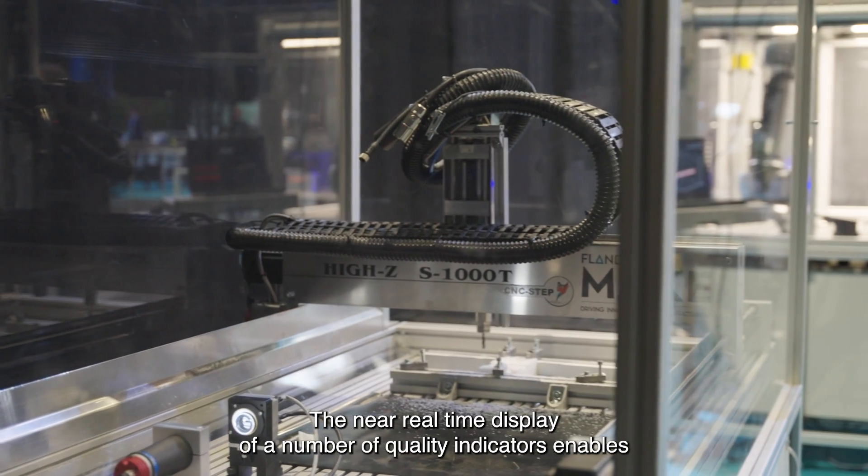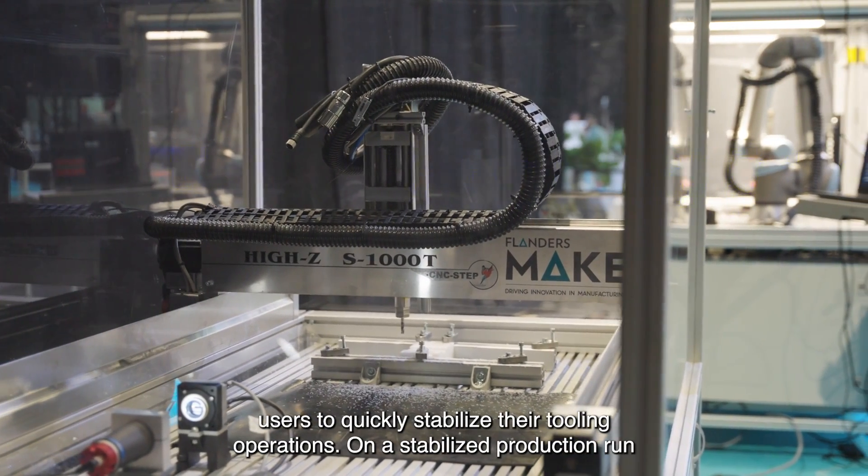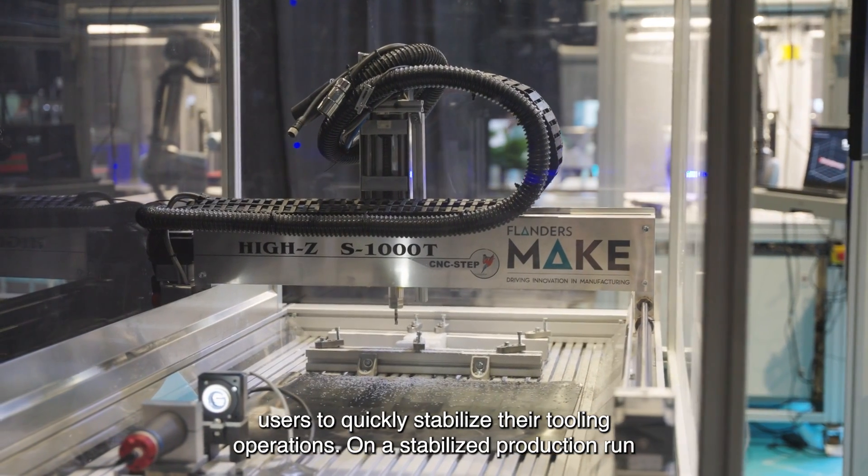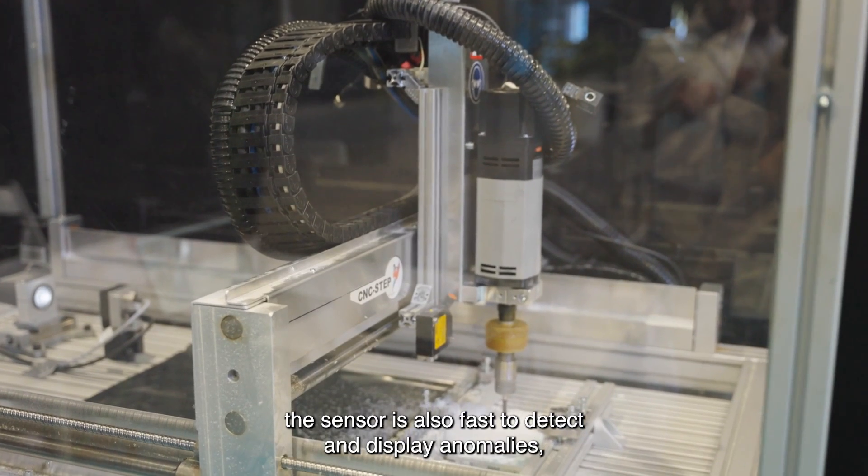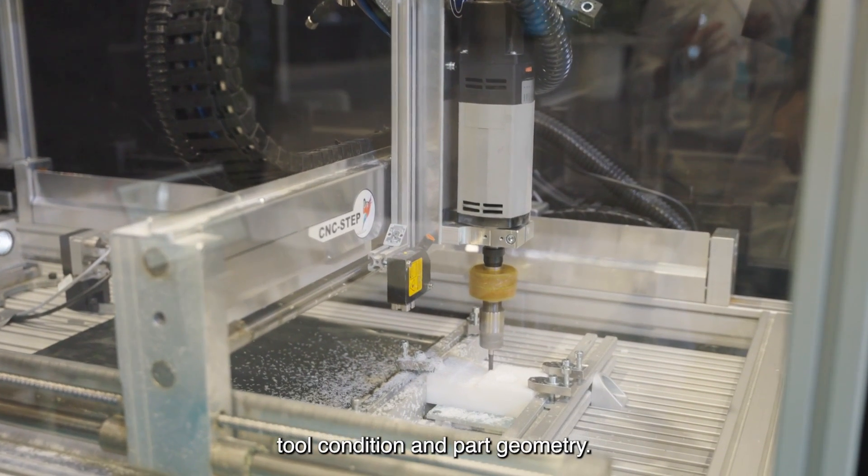The near real-time display of a number of quality indicators enables users to quickly stabilize their tooling operations. On a stabilized production run, the sensor is also fast to detect and display anomalies, tool condition and part geometry.